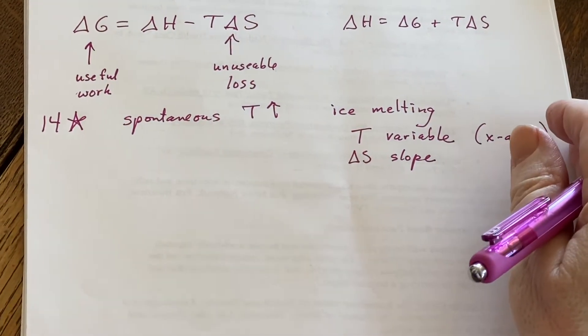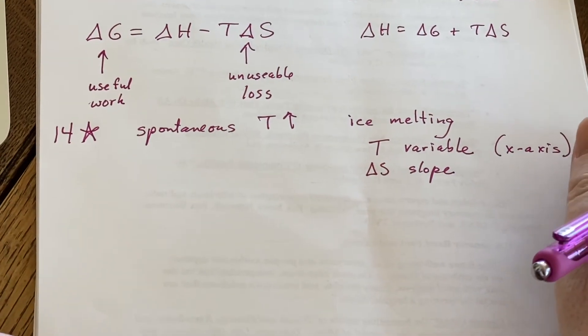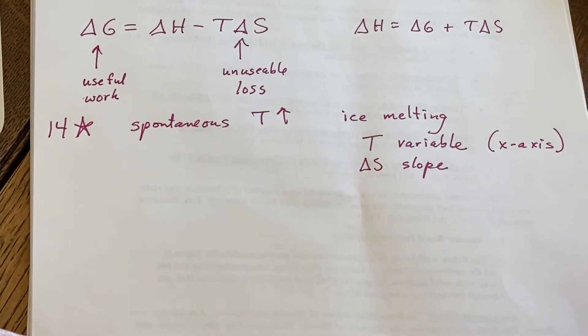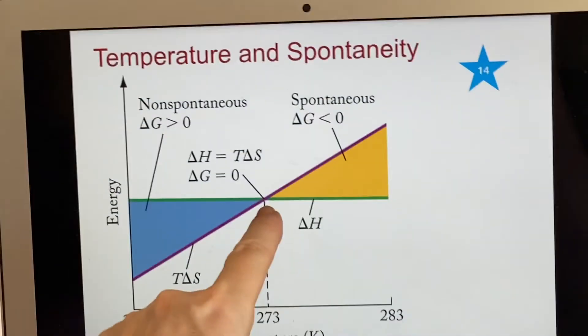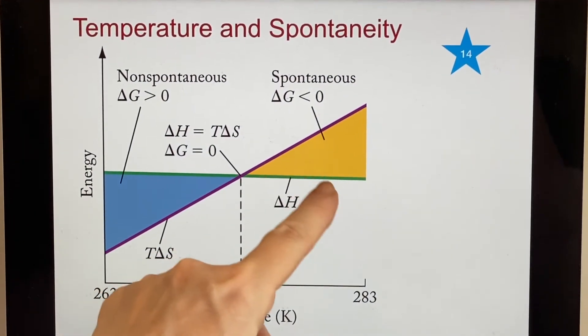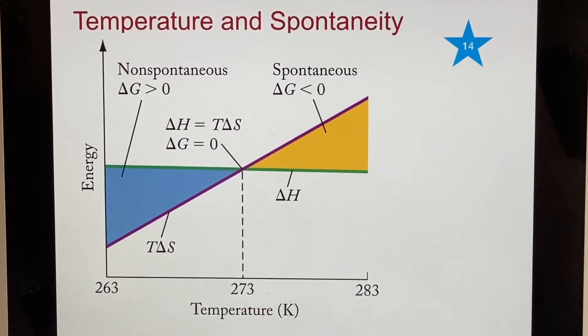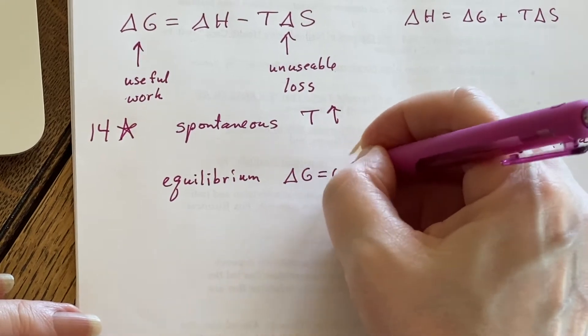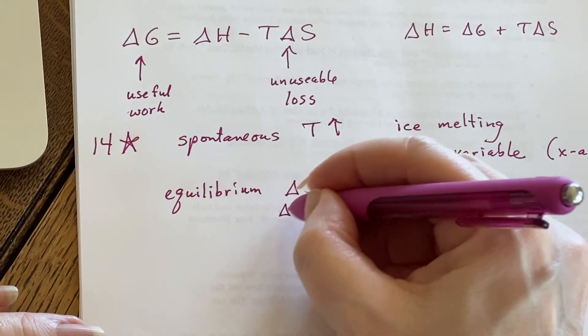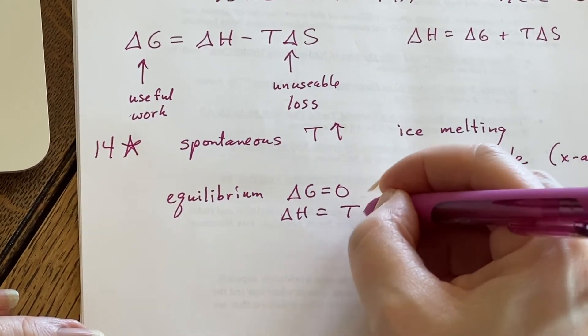So if we want the system to be at equilibrium where we are neither going towards having more water or having more ice, delta G is zero. When that is true, then we know not only that delta G is zero, but that delta H is exactly equal to T delta S.